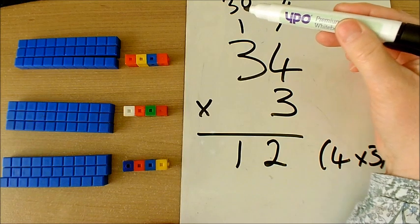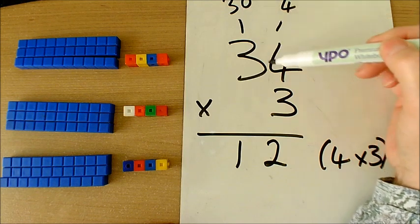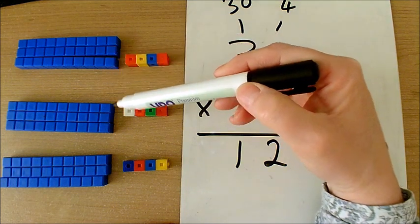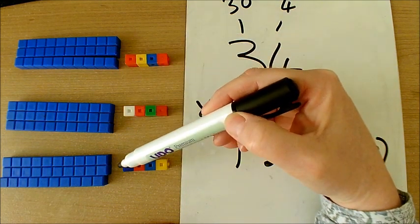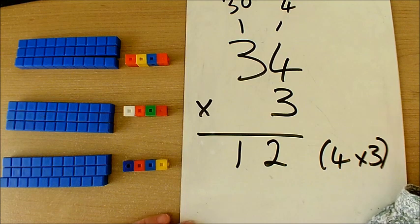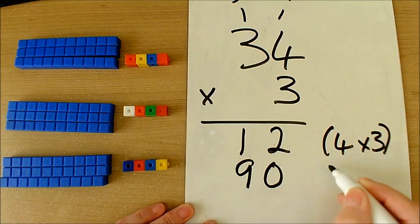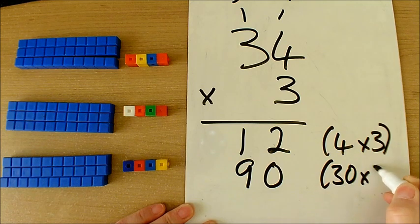I'm now going to multiply my tens, which would be my 30 times 3, also shown here: 30, another 30, another 30. 30 times 3 I know is 90, so I'm going to write that here, so that's for 30 times 3.